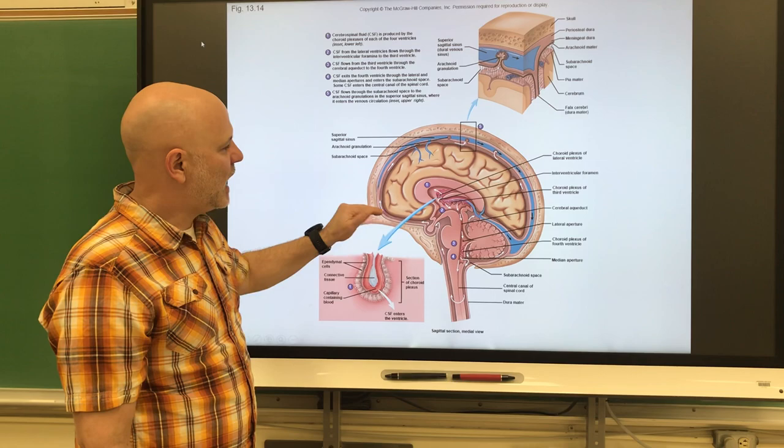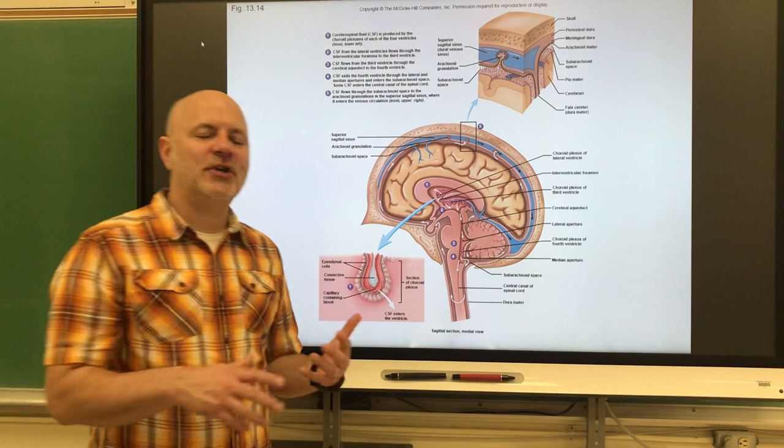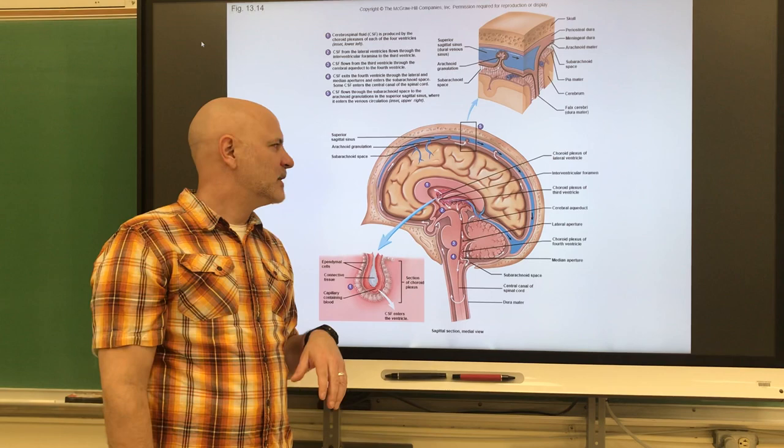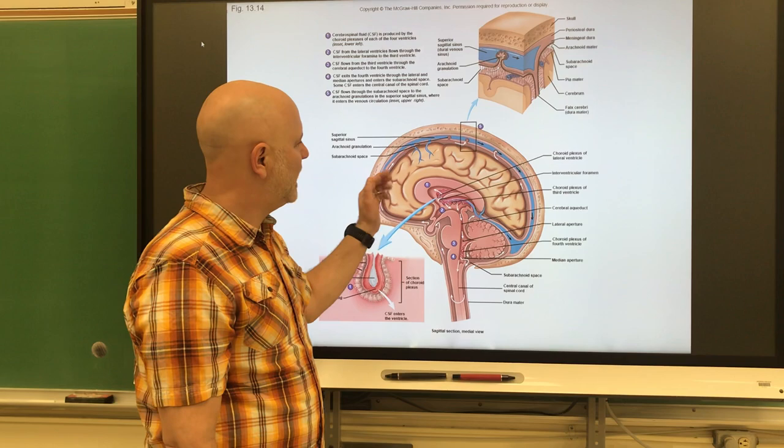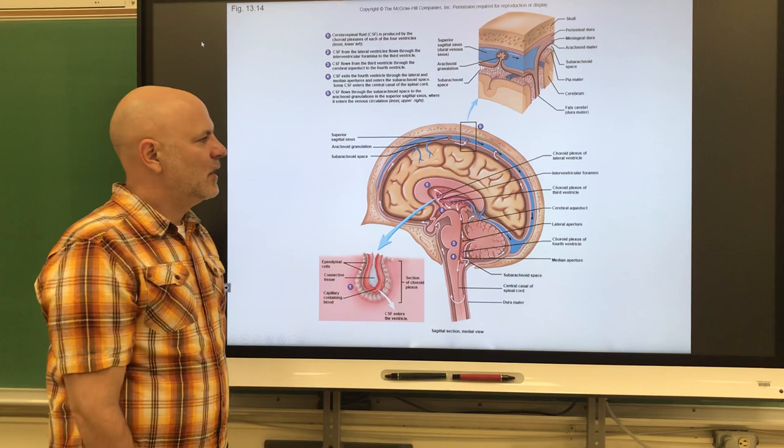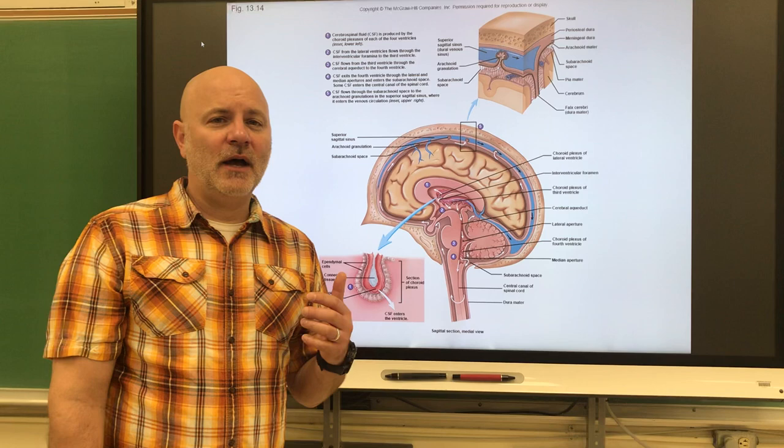This buoyancy is important — if the brain rested on the skull, the weight of the upper parts would push down on the lower parts, killing neurons in those lower areas. CSF also serves in protection as a shock displacer. When you take a blow to the head, the brain moves around inside the skull, which can cause it to recoil and hit the backside, potentially causing swelling in the meninges.